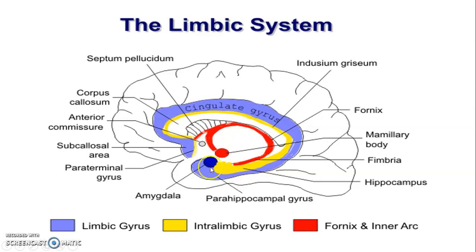The hippocampus is just neighboring the parahippocampus. Then that's the fimbria of the fornix with the posterior columns of the fornix, and the anterior columns of the fornix connecting to the mammillary body of the hypothalamus. This is the septum pellucidum connecting the fornix to the corpus callosum.